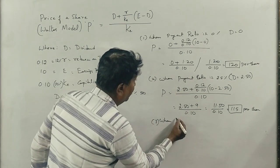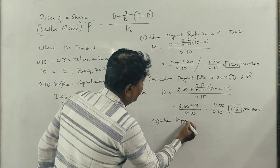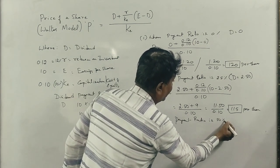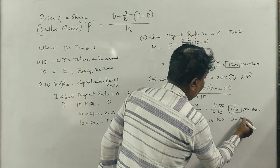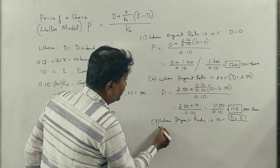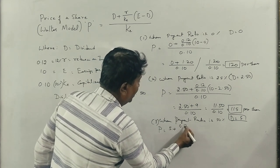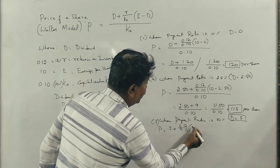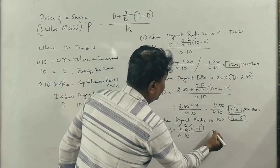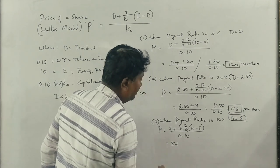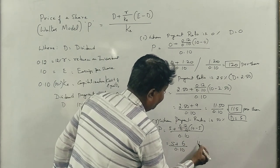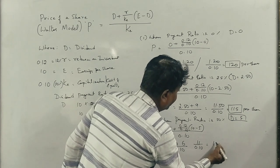Case 3: When payout ratio is 50%, D equals 5 rupees. Using the formula: P = 5 plus 0.12 divided by 0.10, into 10 minus 5, divided by 0.10. This gives 5 plus 6 divided by 0.10, equals 11 divided by 0.10, which comes to 110 rupees per share.